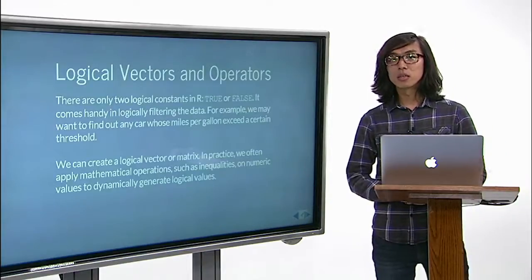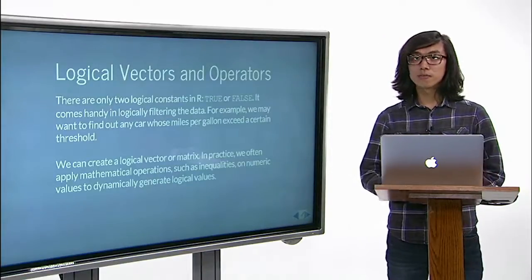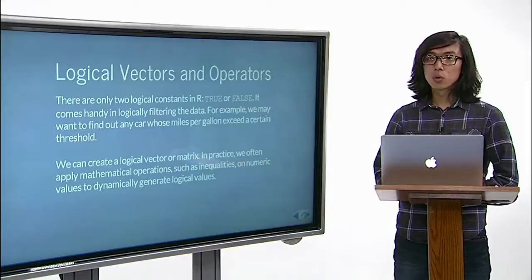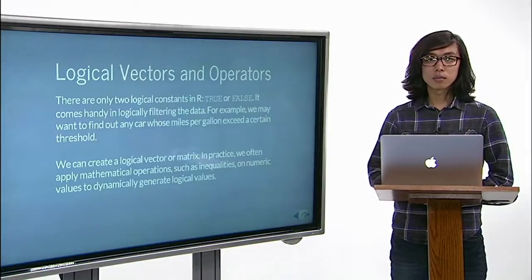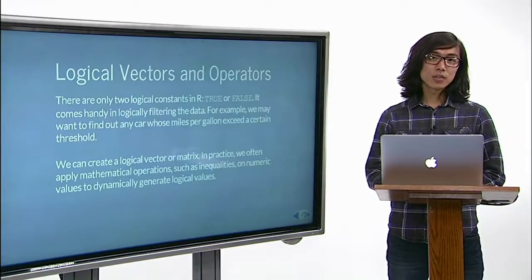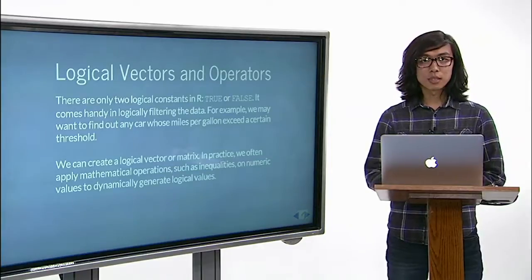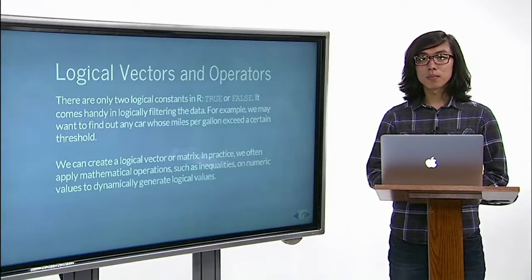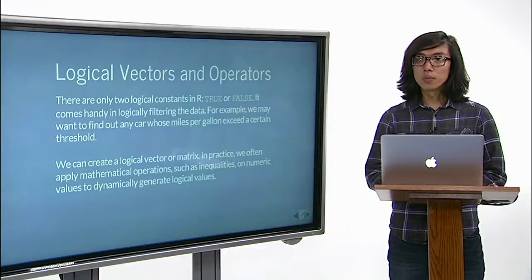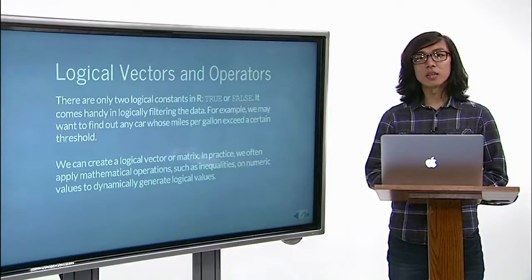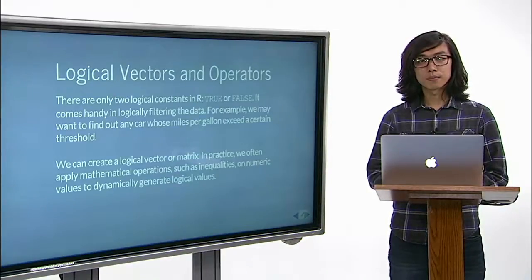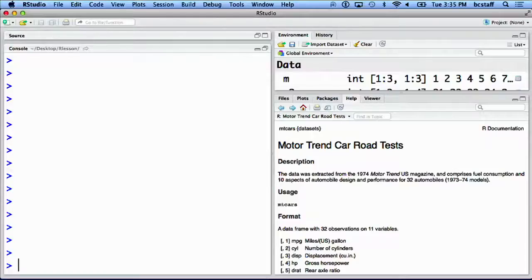Another type of variable is a logical value, true or false. We can create a logical vector or a matrix, as well as using mathematical operations such as inequality or numbers to dynamically generate logical variables. Using the function c(), we can make a vector of logical values.